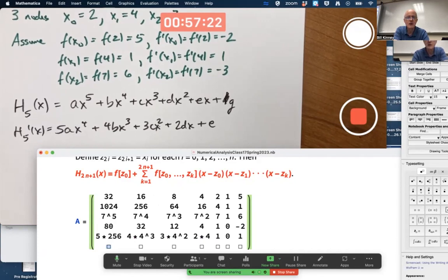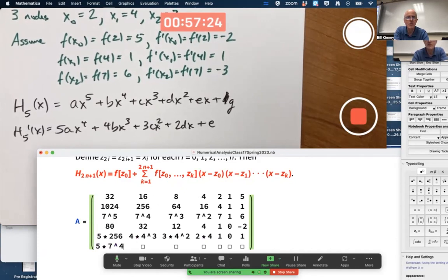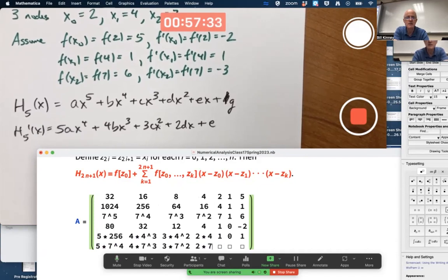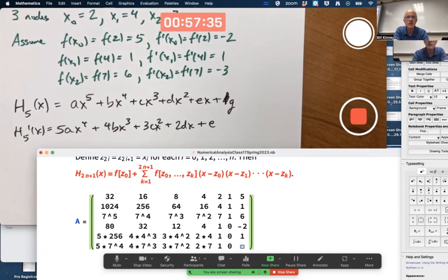And then the last one. Five times seven to the fourth. Four times seven cubed. Three times seven squared. Two times seven. One zero again equals negative three.